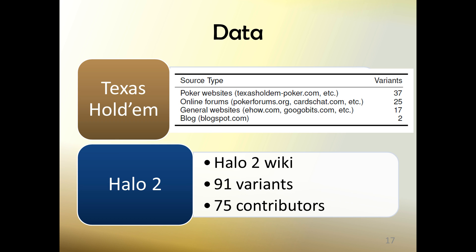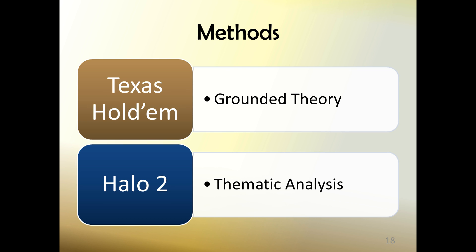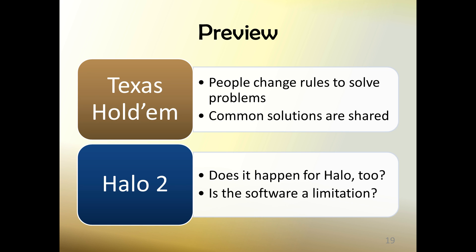From Hold'em, we collected and analyzed 81 descriptions of Hold'em variants from websites and forum posts. Our data source for Halo 2 was a wiki that a community of players used to catalog 91 variants that could be played in Halo 2's custom game sets. We analyzed the Hold'em data from a grounded approach and took the resulting theory as a basis for a thematic analysis of Halo 2. Here's a quick preview: we found changes to rules driven by necessity and community norms for problem solving — what we called canned solutions. We were then able to apply these findings in Halo 2 and uncovered people-based solutions for playing games that the original program did not support.